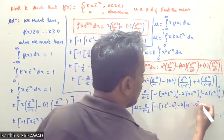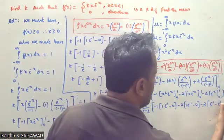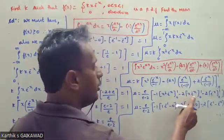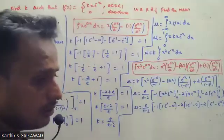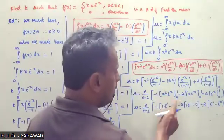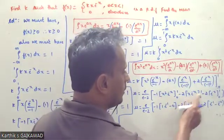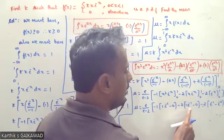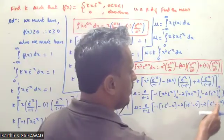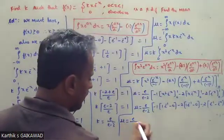Evaluating the limits: minus 0 into anything equals 0. At the upper limit, minus 2 times e^(-1). At the lower limit, e^(-0). Upper limit gives 1 squared times e^(-1) and 1 times e^(-1); lower limit gives 0 squared times e^0, which is 0. Minus 2 times e^(-1) minus e^(-0).